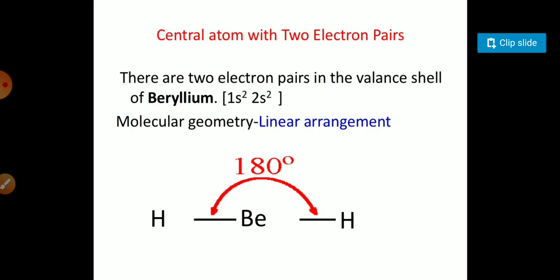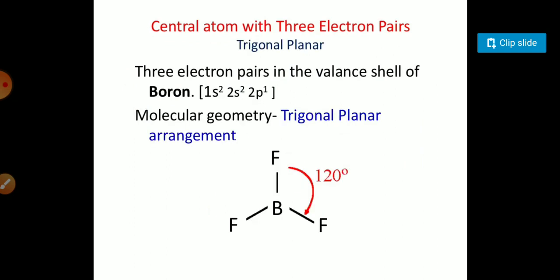There are some shapes like the central atom with two electron pairs. In beryllium, the electronic configuration is 1s2 2s2, that is a linear arrangement with 180 degree bond angle.